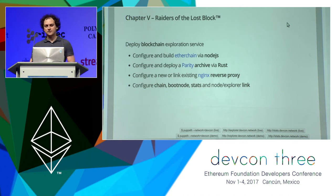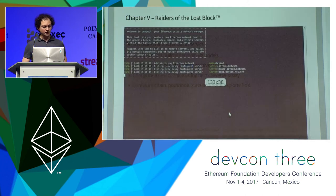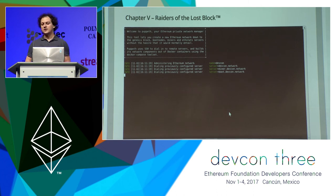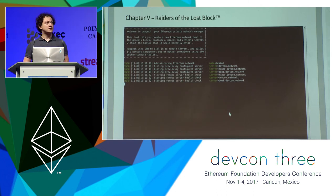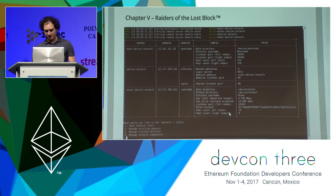Currently there is no open-source block explorer that supports GoEthereum as a backend. However, there is one that supports Parity. Can we actually deploy a Parity node easily? Sure, let's try. We want to deploy a new network component — let's do an explorer. Where do we want to deploy it? We'll put all our websites on the same machine, so let's use defconnetwork as the machine. Yes, we want to share port 80, and let's do explorer.defconnetwork.